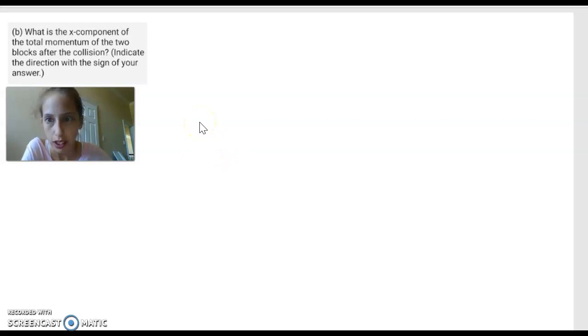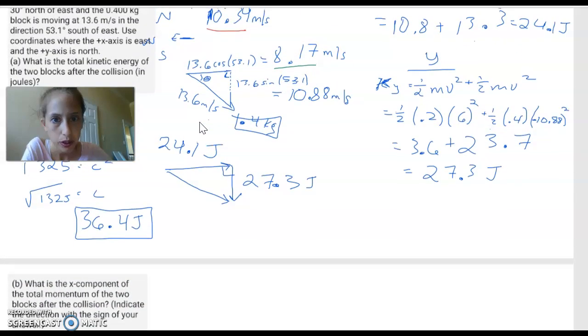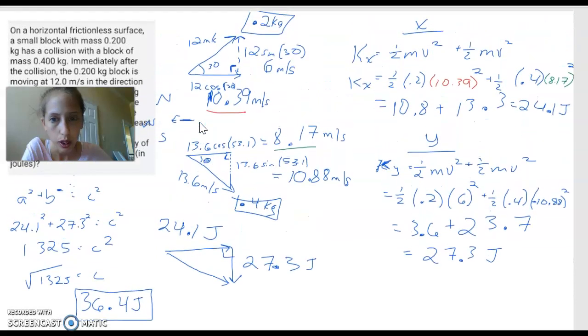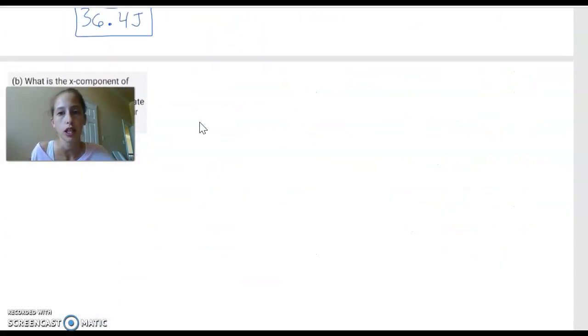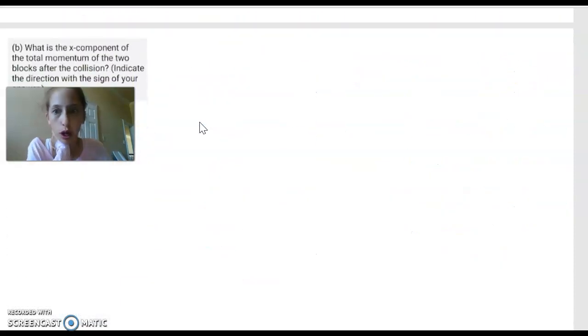We did most of the heavy lifting on the previous problem, so... I'm not fancy enough to know how to copy and paste. Yeah, no, not fancy enough. The x component of the momentum. So we know going sideways it's 10.39 meters per second. I'll just redraw it.